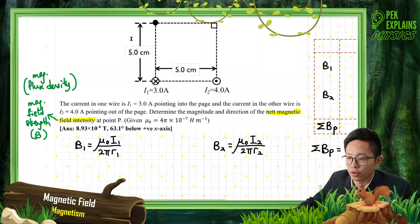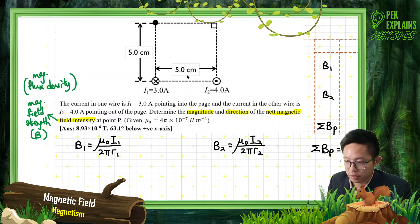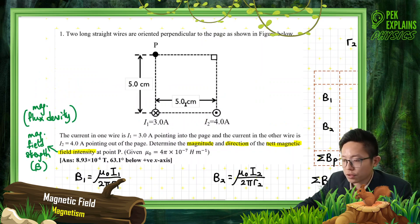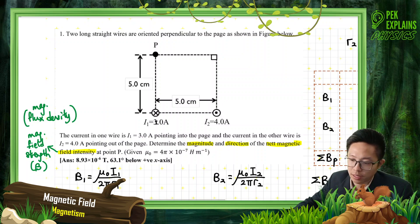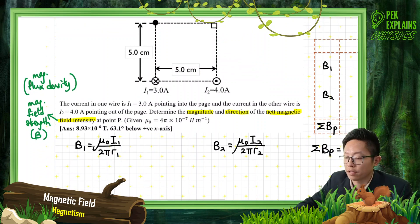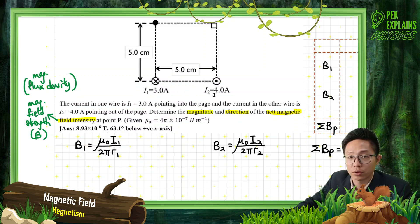The question asks for magnitude and direction. In fact, this is a vector quantity, so you need to give both, even without those words being stated. We want to find the magnetic field at point P. We have two currents, so each current will provide its own magnetic field to point P. For current I1, we call it B1; for current I2, we call it B2.